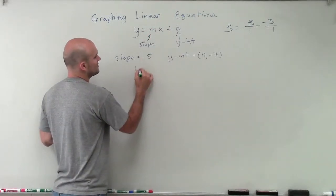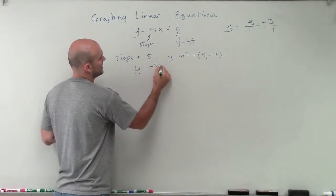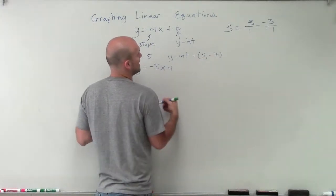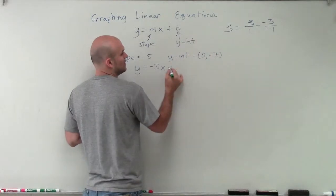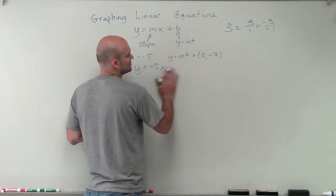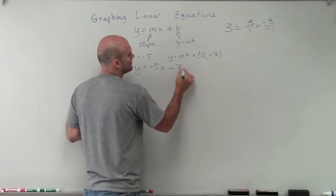Because we can plug this information into our equation. So we know our slope is negative 5, so we can write y equals negative 5x plus our y-intercept is negative 7. But remember, we need to write this as a value, not as a point. So that's going to be minus 7. So instead of plus negative 7, we can just write minus 7.